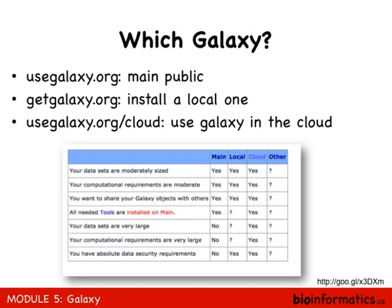So, which Galaxy? There's the main Galaxy at usegalaxy.org, there's the get-Galaxy so you can install a local one, and then you can use Galaxy on the cloud — which is also what we're doing today. Which one is right for you? It really depends what you want to do. If you have moderate file sizes — gig to mag size — the public instance works. If you're in the multiple tens or hundreds of gigs, that's more the cloud or your local version.